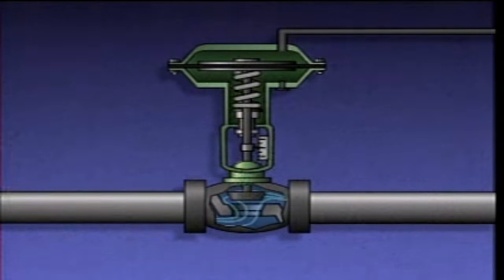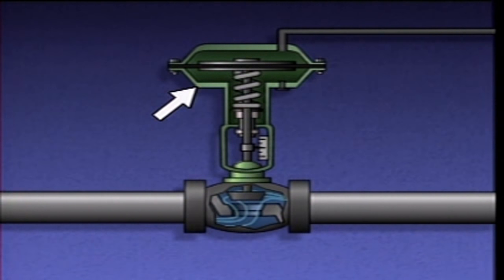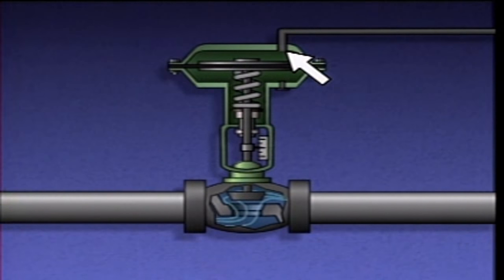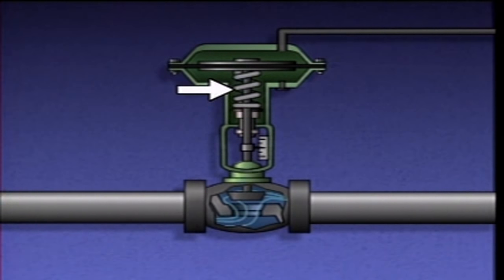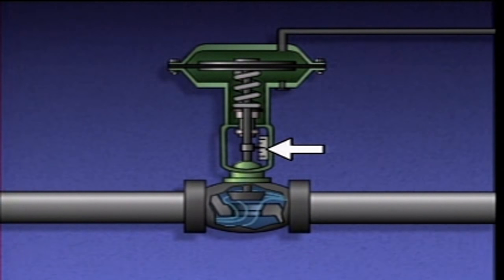A typical single-acting diaphragm actuator consists of a casing, a diaphragm, an air supply port, an air vent, a spring, a stem, and a valve position indicator.